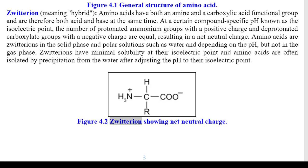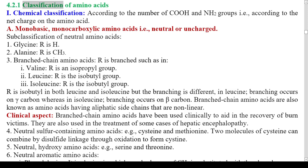4.2.1 Classification of Amino Acids — I: Chemical Classification, according to the number of COOH and NH2 groups, i.e., according to the net charge on the amino acid. A) Monobasic, monocarboxylic amino acids — neutral or uncharged. Subclassification: 1. Glycine (R is H); 2. Alanine (R is CH3); 3. Branched-chain amino acids where R is branched — Valine (R is isopropyl group), Leucine (R is isobutyl group), and Isoleucine (R is isobutyl group). In leucine, branching occurs on the gamma carbon, whereas in isoleucine, branching occurs on the beta carbon.